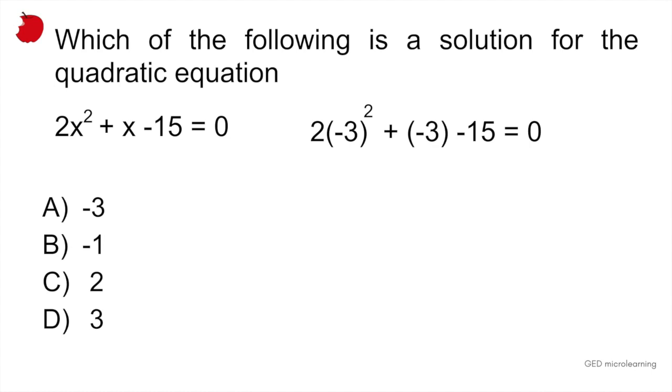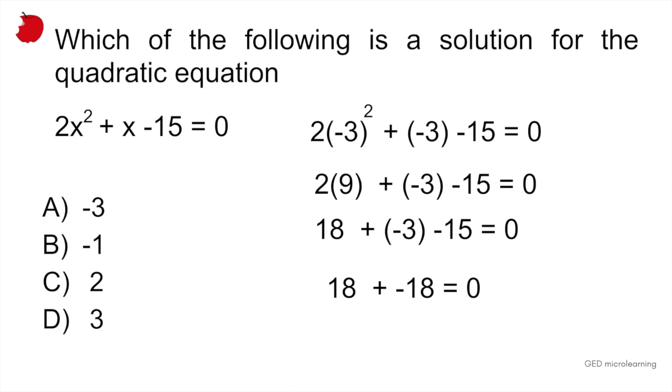So if we solve for your exponents first, -3 squared is the same thing as saying -3 times -3, which would be 9. So now we have 2 times 9 plus -3 minus 15. 2 times 9 is 18, and then we have plus -3 and -15.